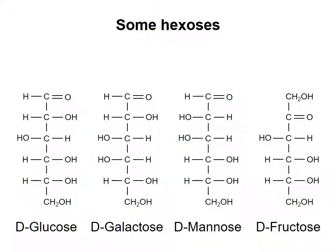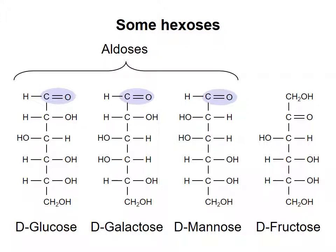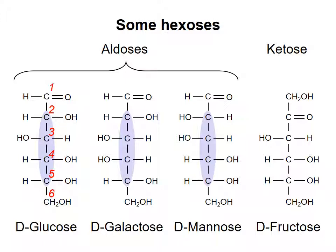Shown here are Fischer projections of some example monosaccharides. These monosaccharides are all hexoses because they contain six carbons. They are isomers of each other because they share the same chemical formula, C6H12O6. Glucose, galactose, and mannose are aldoses, while fructose is a ketose because of the positions of the doubly bonded oxygens in each molecule. To number the carbons of a monosaccharide, we start with the carbon at the end of the molecule closest to the carbonyl group, so carbon 1 is at the top and carbon 6 is at the bottom. The three aldoses each have four chiral carbons — carbons 2, 3, 4, and 5 — while fructose has only three chiral carbons: carbons 3, 4, and 5.